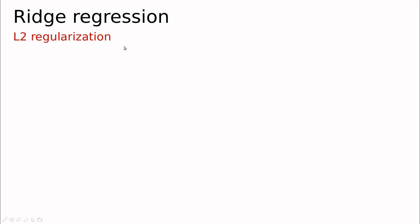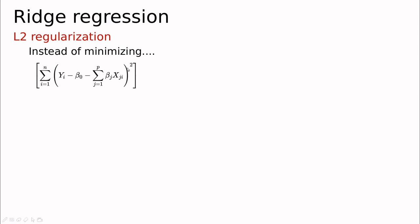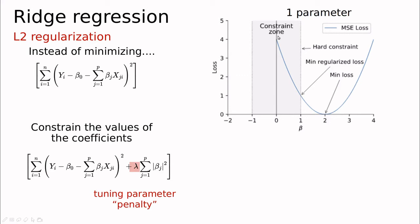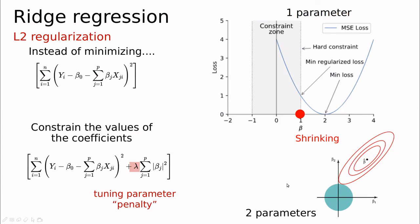One way to solve this is L2 regularization. Instead of just minimizing the error function, we also minimize the sum of all parameters squared, weighted by a tuning parameter — called a Lagrange multiplier in mathematical jargon. In one dimension this means: if the parabola represents the error and the least squares solution is its minimum, regularization constrains the parameter to, say, between minus one and one. This forces us away from the best solution — this is called shrinkage. It's not very meaningful in one dimension, but it becomes meaningful in two dimensions with two parameters.